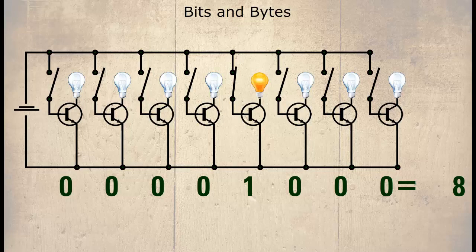A computer processor has no idea what the number decimal 64 is. But if we said 001000000, it would understand.